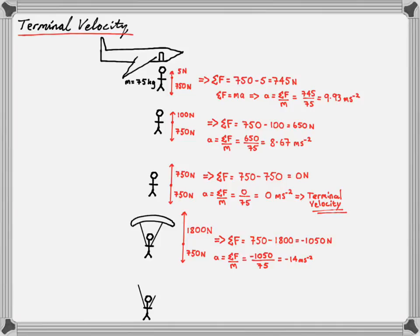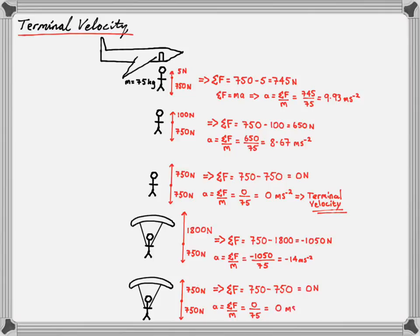As he slows down, the force of air resistance also decreases — remember, air resistance depends on velocity. It decreases through 1500 newtons, 1000 newtons, and eventually back to 750 newtons, where the sum of forces equals zero again and acceleration equals zero. He's traveling at constant velocity again, but this new terminal velocity is lower than the initial one. He's reached two terminal velocities during his travel, and eventually he hits the ground.